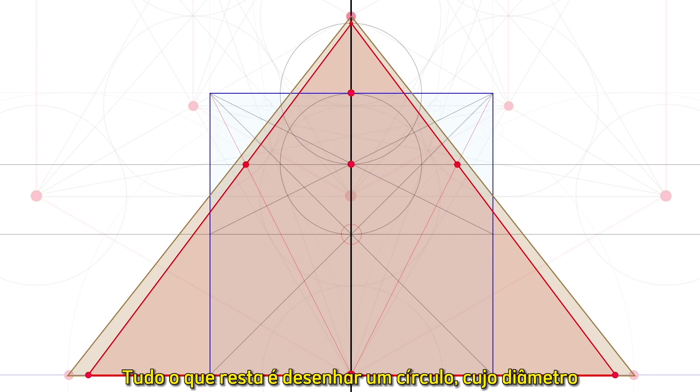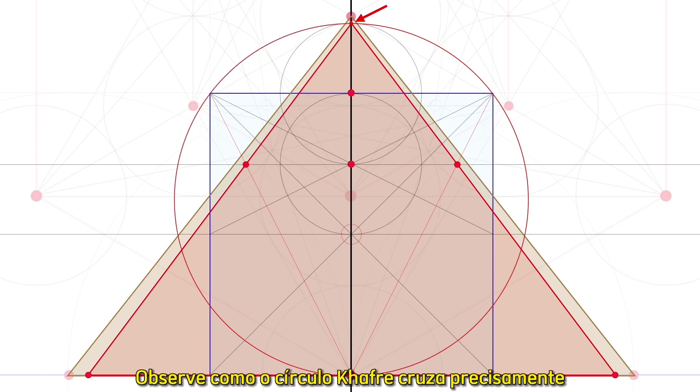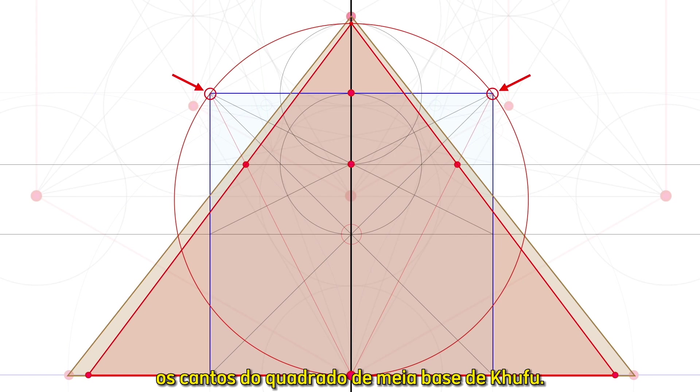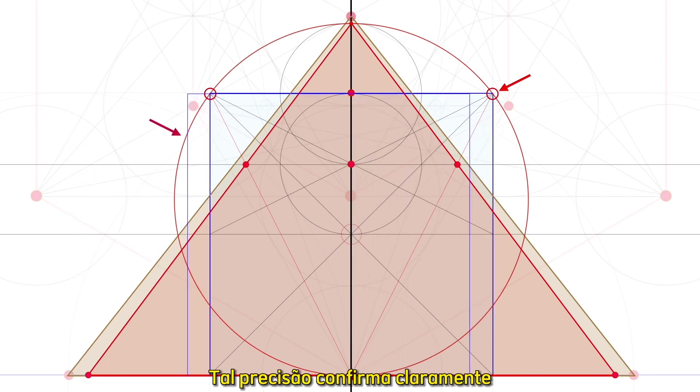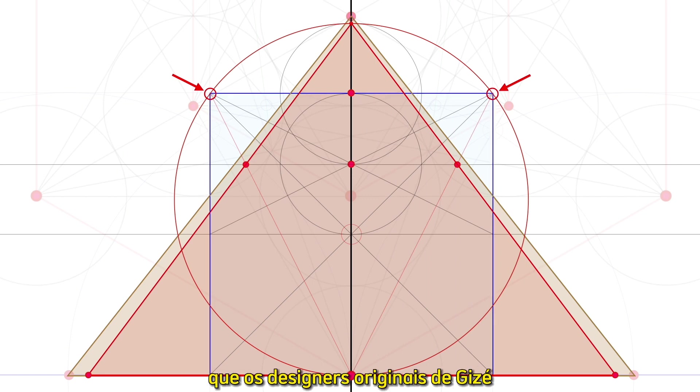All that remains is to draw a circle whose diameter is the height of the triangle we just discovered. Note how the Khafre circle intersects precisely the corners of the Khufu half-base square. Such accuracy clearly confirms that the original Giza designers intended to connect these two giant monuments through pure geometric perfection.